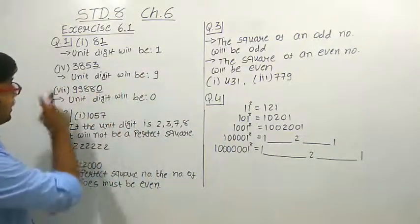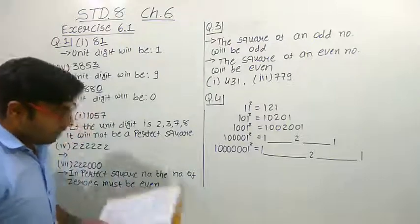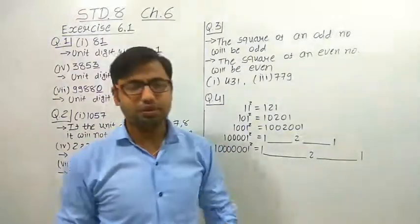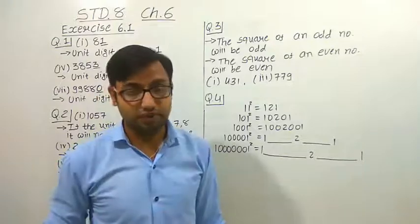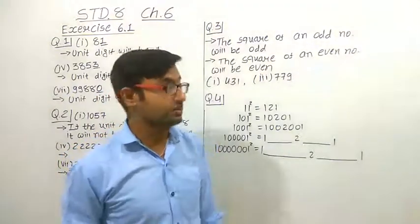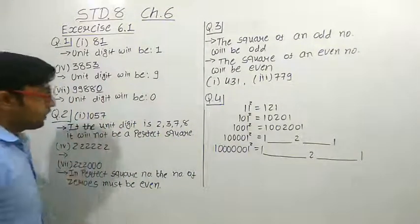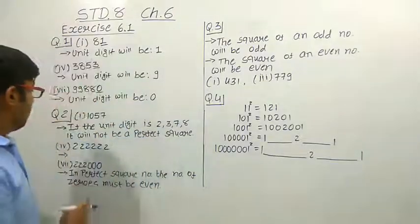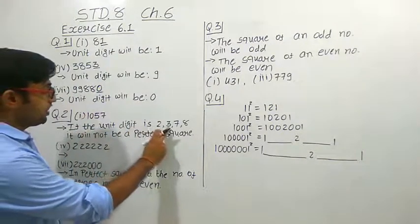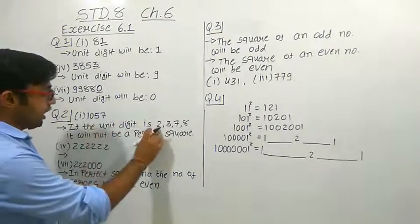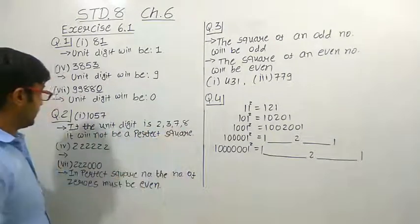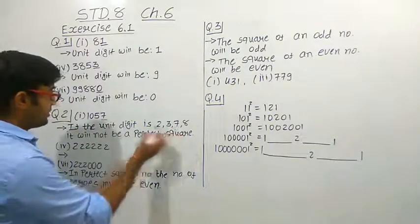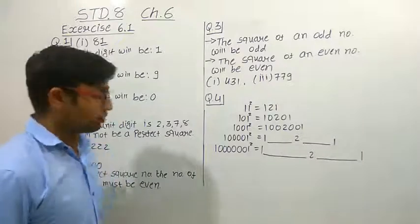This is question number 1. So in this way you can now solve the other questions. Question number 2: the following numbers are obviously not perfect squares — give reasons. Here we have given some numbers which are not perfect square numbers, but we have to answer why. The first number given is 1057. When we study square numbers, one thing we learned is that if the unit digit is 2, 3, 7, or 8, it will not be a perfect square number. Here the unit place digit is 7, so it will not be a perfect square number.